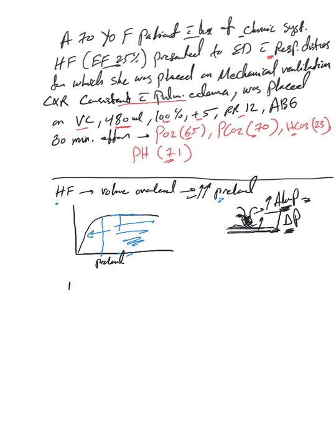So based on this we need to do two things: we need to first decrease preload and second increase alveolar pressure. And third, we need to decrease LV afterload.